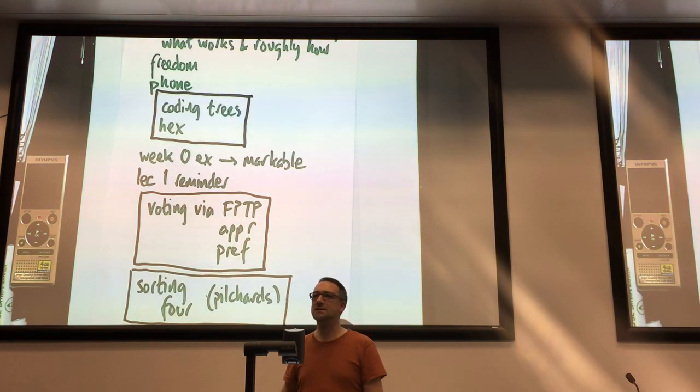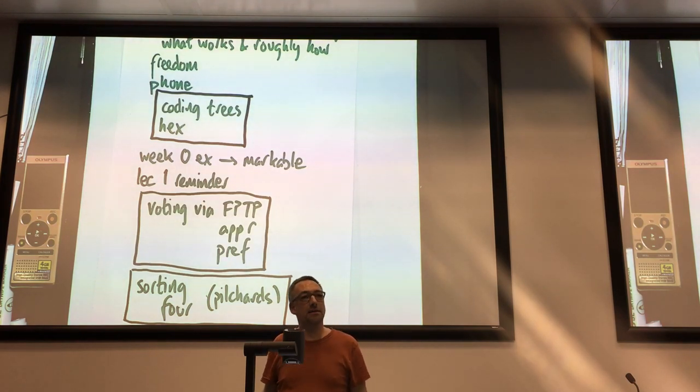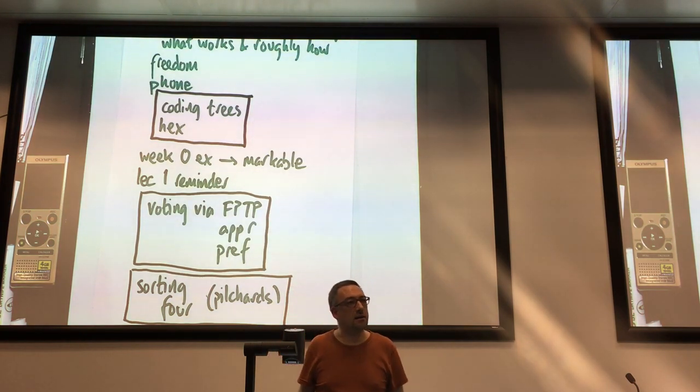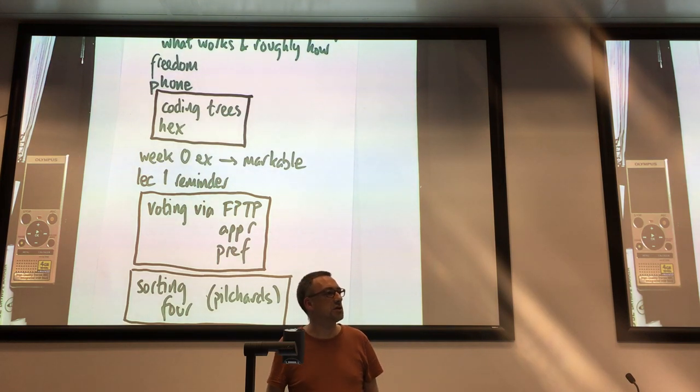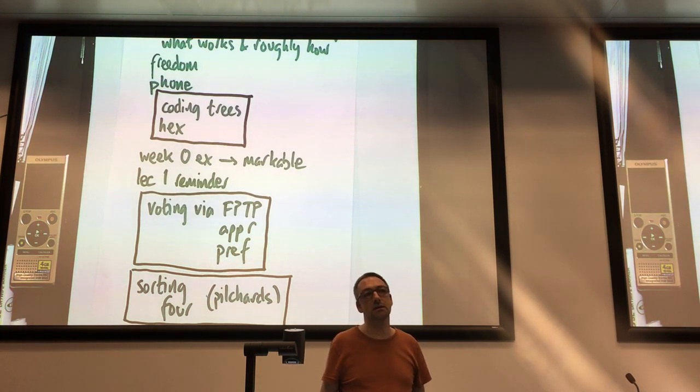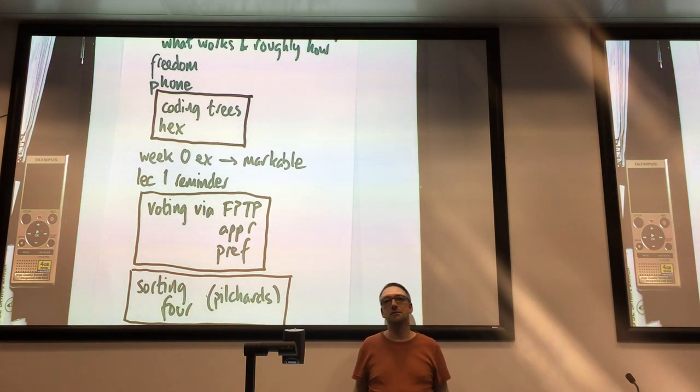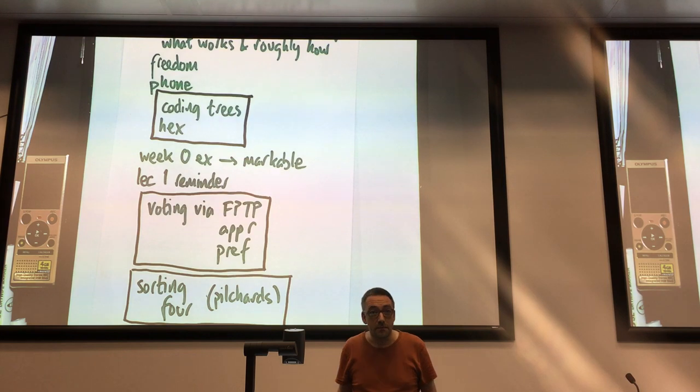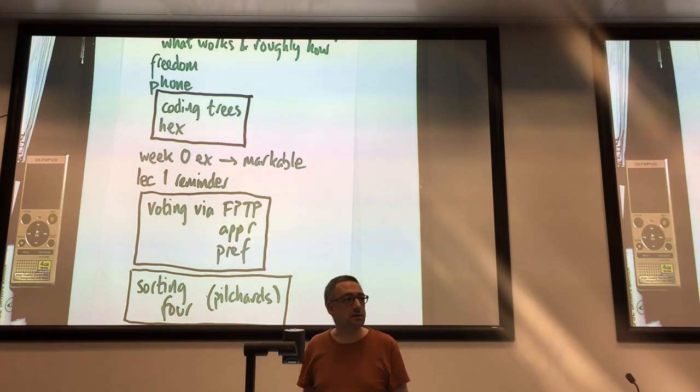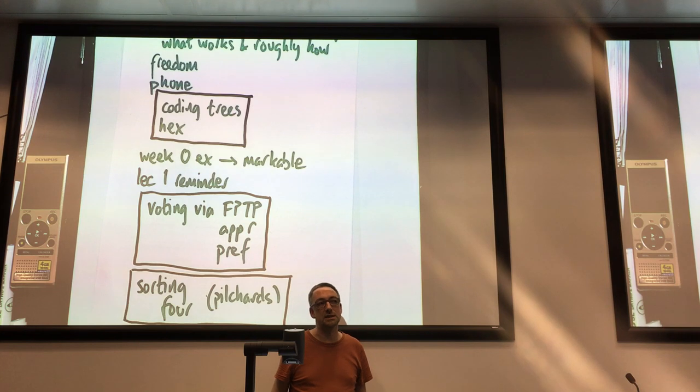So you're asked in a first-past-the-post election to place, to mark with an X using a pencil, the candidate of your choice. So let's say you've got seven candidates, how many bits of information are you transmitting? Three bits of information to distinguish between your seven possibilities.